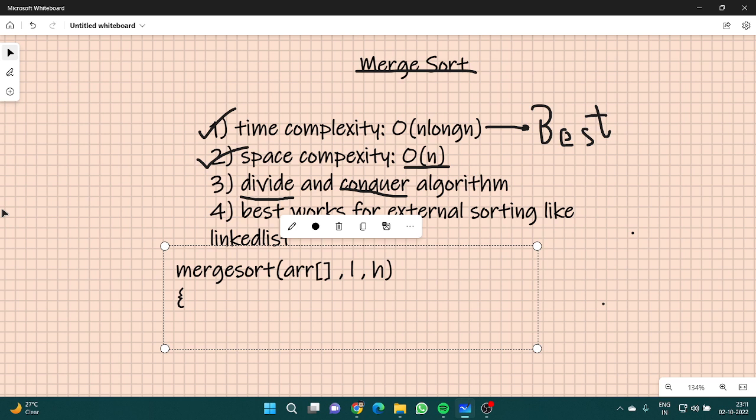Now, first what we have to do is we have to find the middle point to divide the array into two halves. So let's suppose middle value is L plus H by 2. I will remind you that this is just a pseudocode, not the original C++ code.